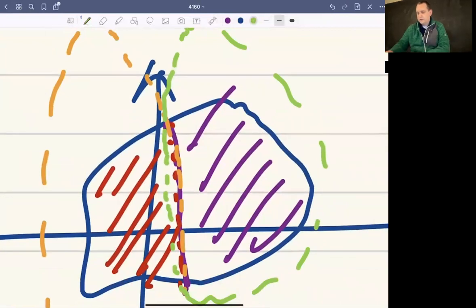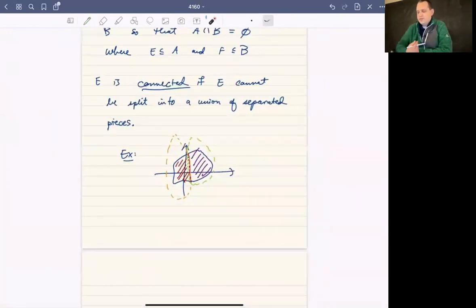I'm not a good artist, sorry, but it slightly overlaps, right? There's some points that are in the intersection there. So there's no way that that piece can be separated into two pieces. So that's what a connected set is.